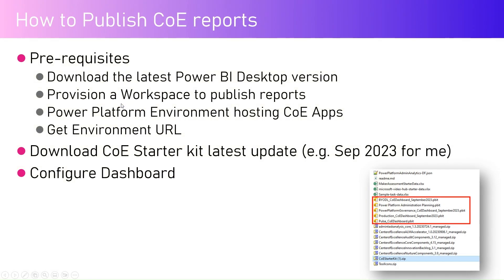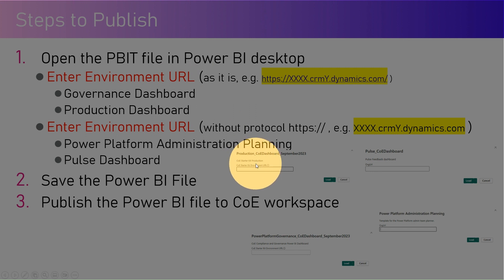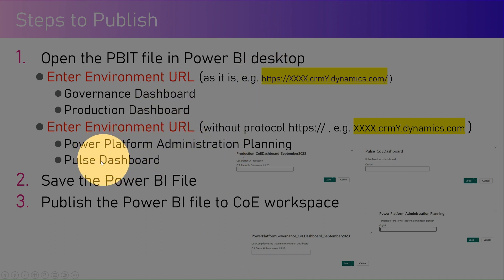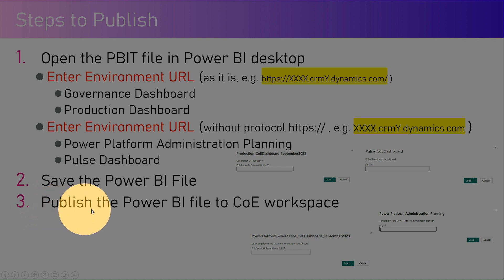To publish a Center of Excellence Starter Kit report, you need to open each pbit file in Power BI Desktop — it will ask for parameters. For two reports the parameters are a bit different: you need to put the entire URL with the protocol, but for two dashboards the URL format is different. You need to be careful not to include the protocol for the Power Platform Admin Planning and Pulse dashboards, as they require a different parameter. Once you put the parameter correctly, it will start loading the data model, and then you can save the pbix file and publish it to your Power BI workspace.